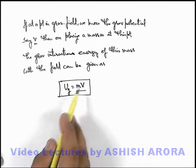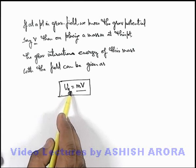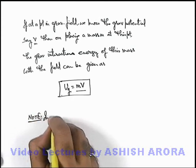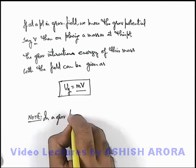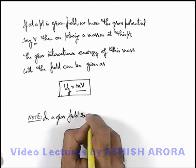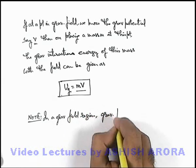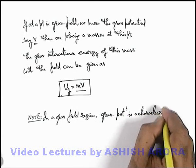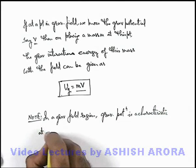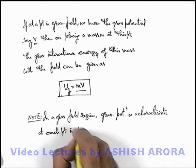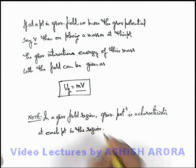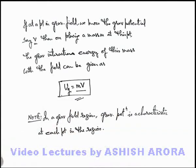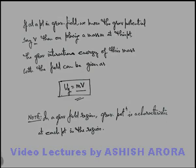In a gravitational field region, gravitational potential is a characteristic at each point in the region, in such a way that at that point if we place a mass m, the gravitational interaction energy of the mass can be given by the expression m times V.